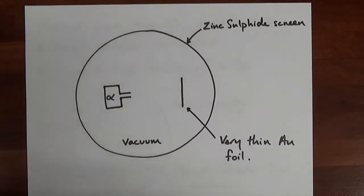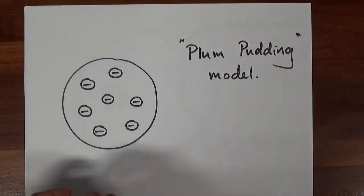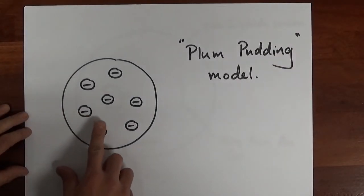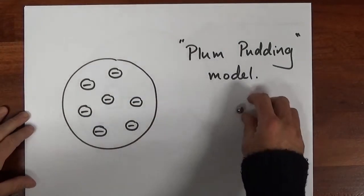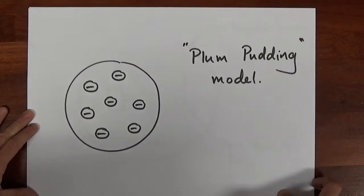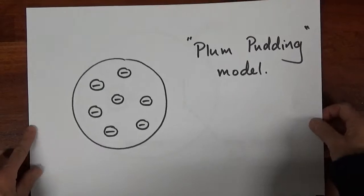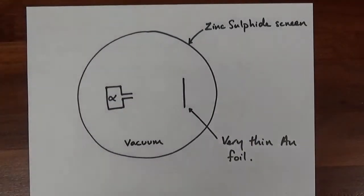What Rutherford was expecting - if the atom is really a plum pudding model like this and your alpha particle is coming through, let's say it gets deflected by that one, goes down a bit, goes up a bit - they'll wiggle their way through and come out. So he was expecting nothing really to happen apart from these alpha particles to all go flying through the gold foil and come out the other side.